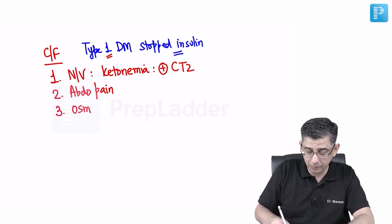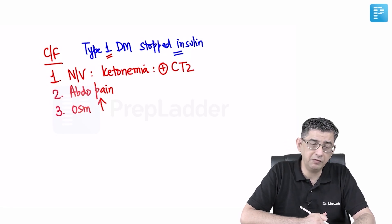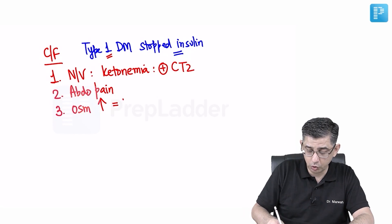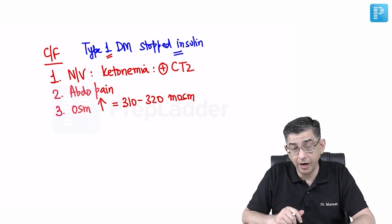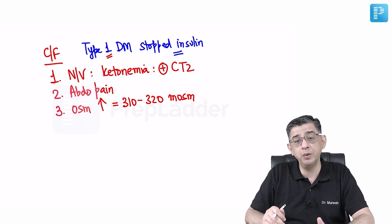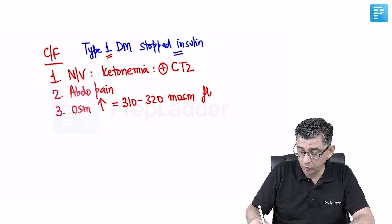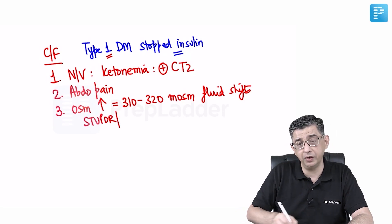Because blood sugar is rising, plasma osmolality will also rise. Normal plasma osmolality ranges from about 275 to 295 milliosmoles, but in this case the sugar values are rising, so osmolality can go up to about 320 milliosmoles. This increase in plasma osmolality contributes to fluid shifts across the brain, causing the child to become lethargic, with possible stupor or coma.